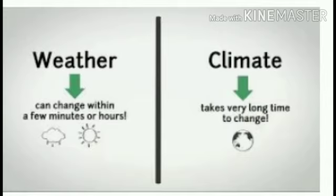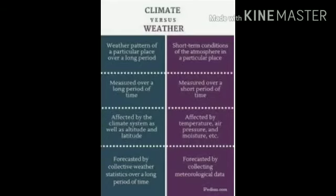Weather conditions can change rapidly. Whereas climate is the average atmosphere prevailing in an area over a considerable period of time. Climatic averages are calculated over a minimum of 35 years.